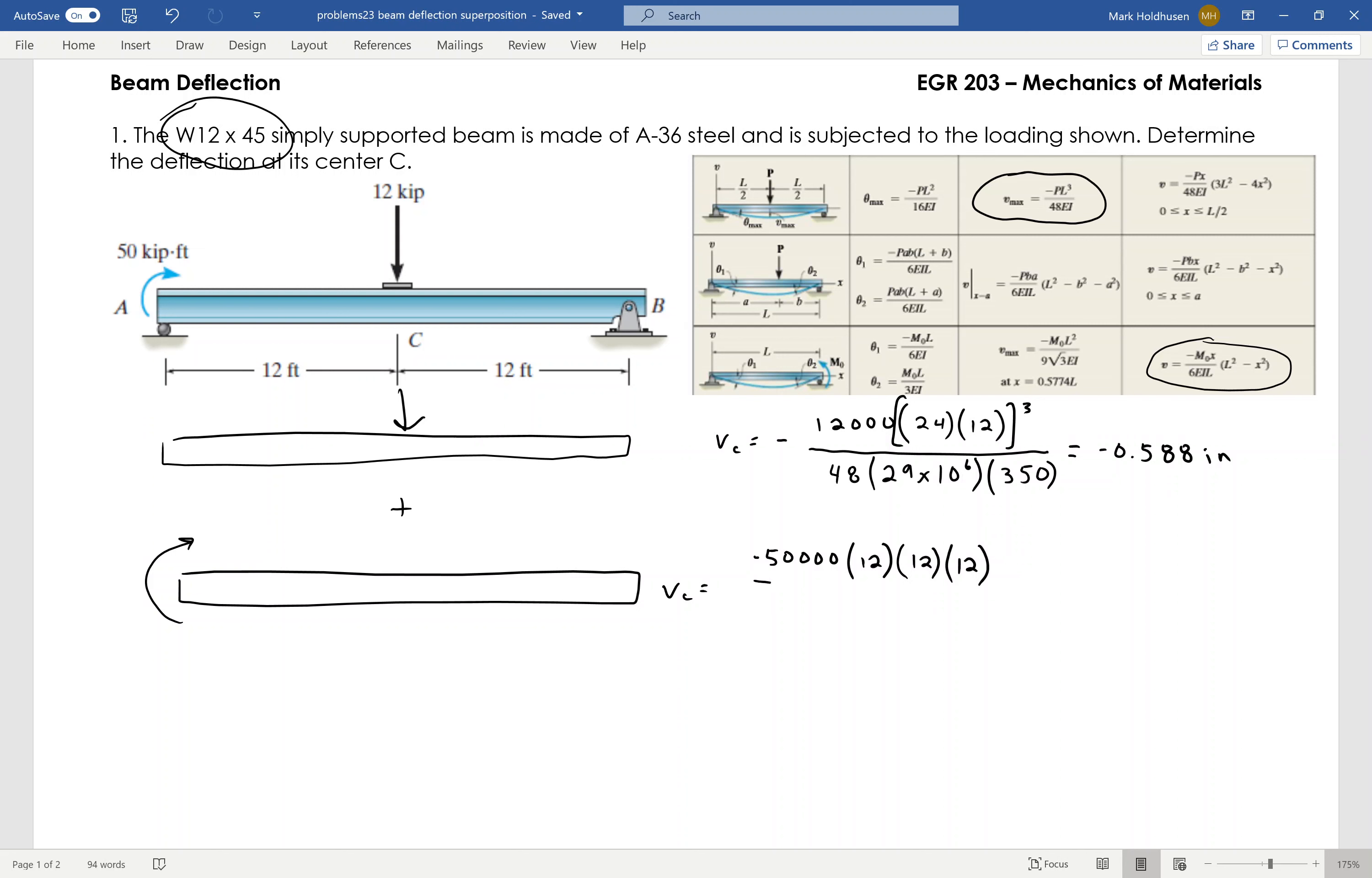Divided by 6EIL. So 6, E is 29 times 10 to the 6th, I again is 350. Again I can look that up in the other appendix for W12x45 wide flange beam. And then I have L which is 24 feet, but again I need to convert that to inches, so I take it times 12.